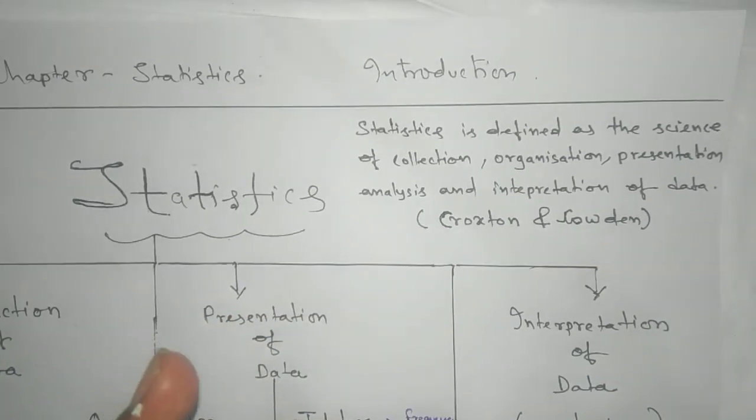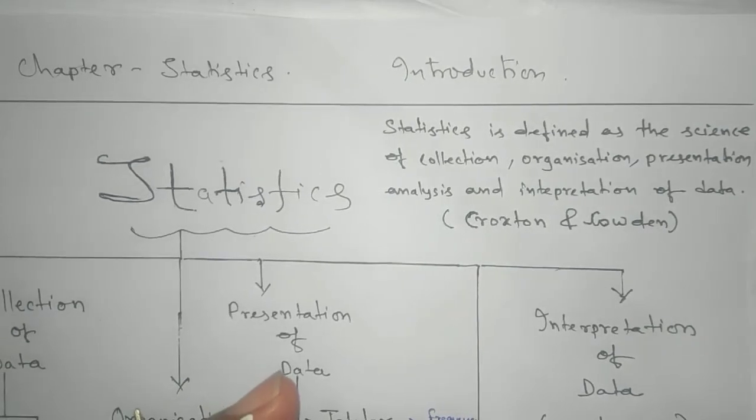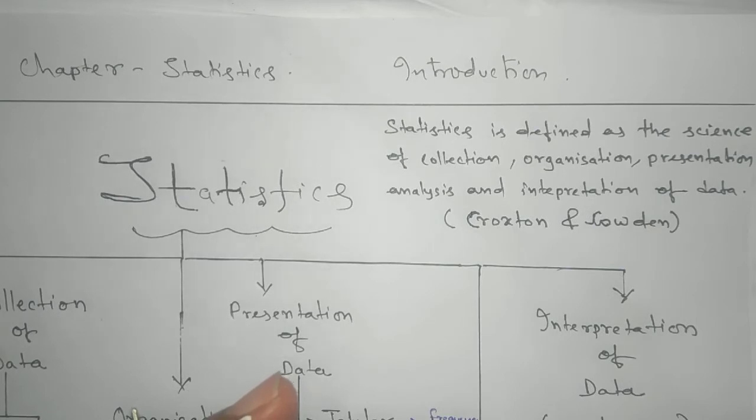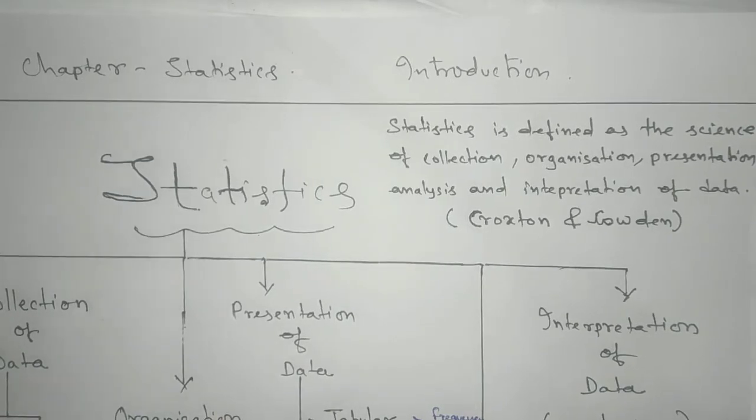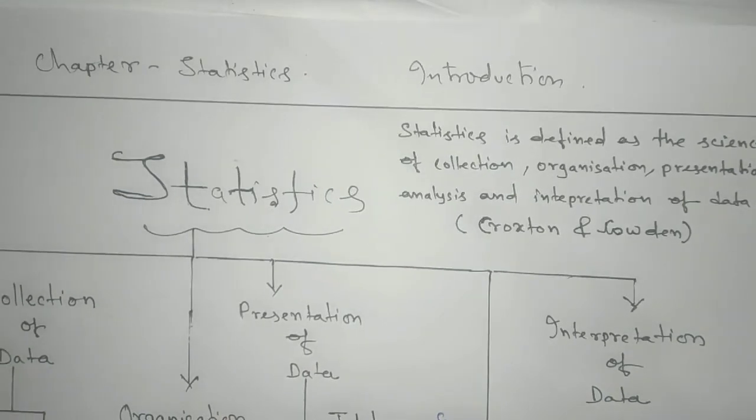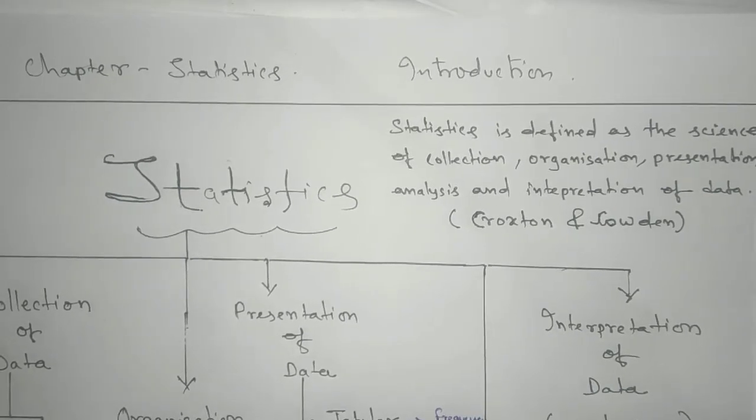Statistics is defined as the science of collection, organization, presentation, analyze and interpretation of data. So here why they are using science? What does it mean science? Science has lots of definition. One definition is that systematic knowledge that is called science.